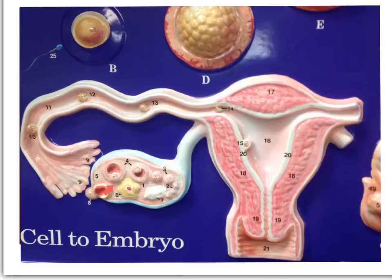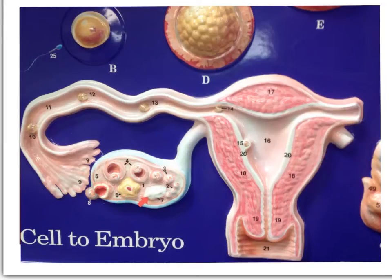Once this follicle has ruptured it builds up a scar tissue known as the corpus luteum. This scar tissue will release various hormones from the ovary. Then we see the corpus albicans, which is a degenerative product of the corpus luteum.